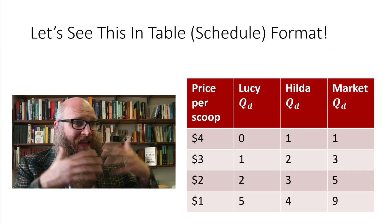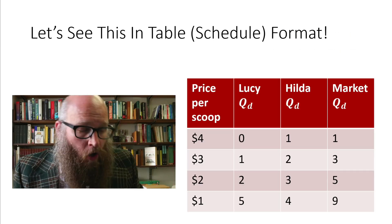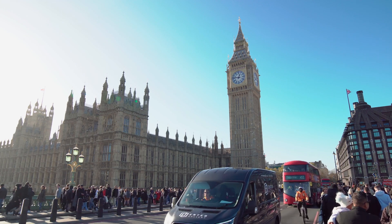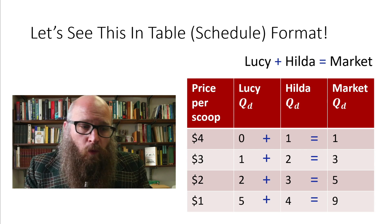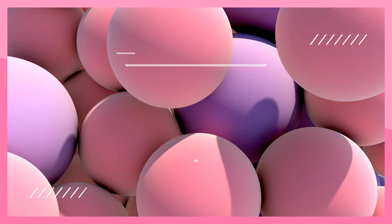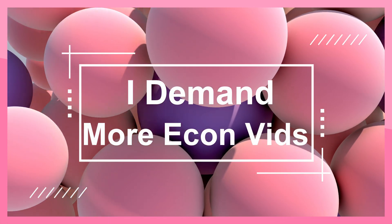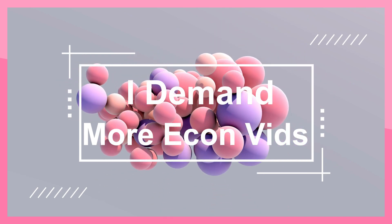We can put this in a table or schedule format — some call it the demand schedule. Lucy plus Hilda equals the market: zero plus one equals one, one plus two equals three, two plus three equals five, and five plus four equals nine. Now that we know the basics of the demand curve, tune in next time and we'll see how people's demand changes when other things happen in the world. We'll see you next time.